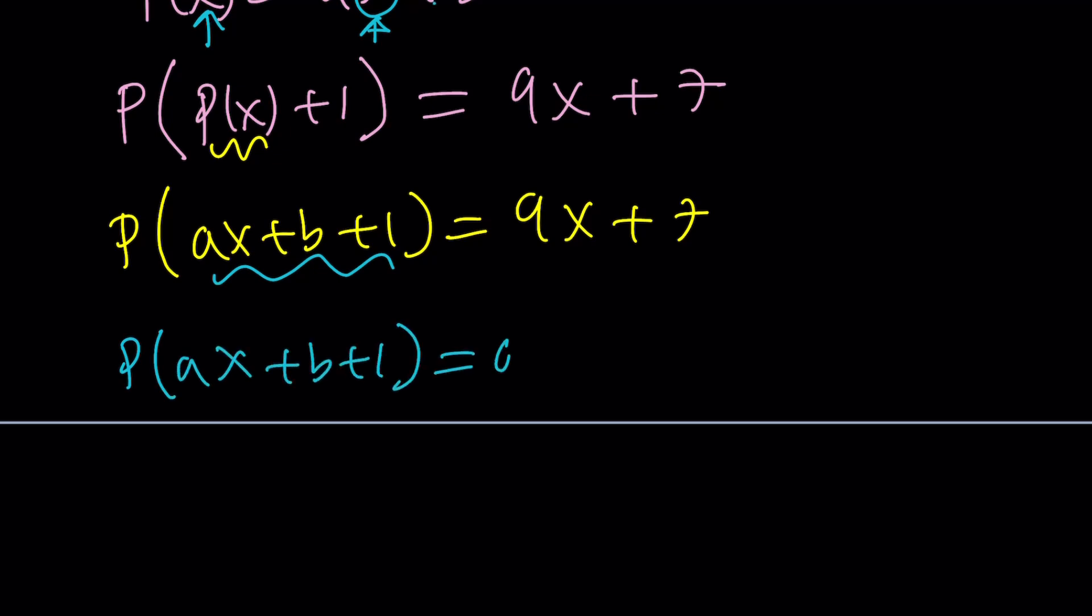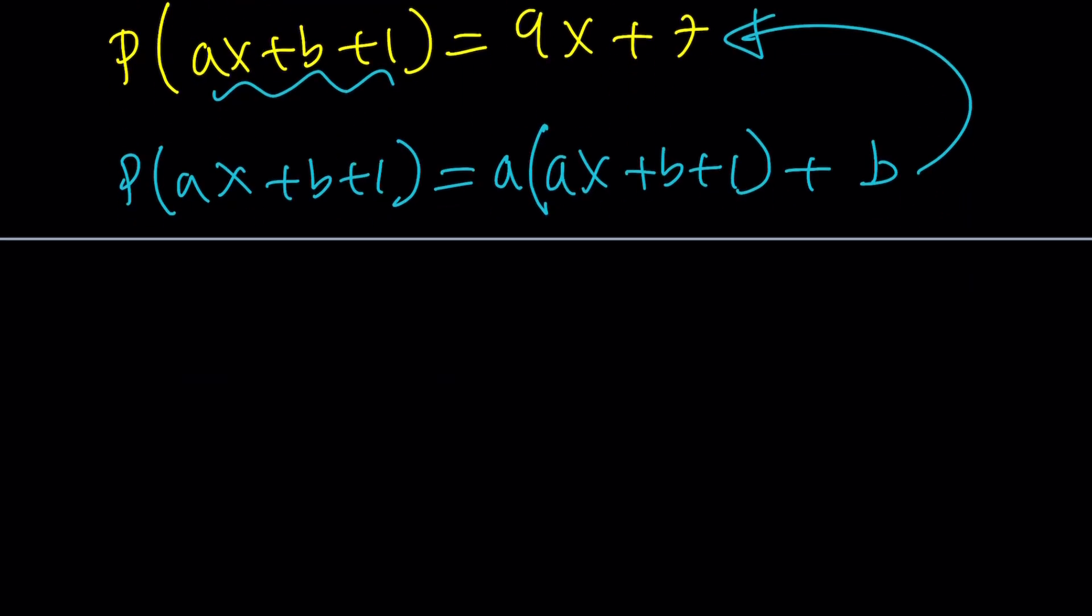But P of something is a times something plus b. So now we're going to replace x with ax + b + 1, of course, in both places. So P(ax + b + 1) is going to be, from here, a(ax + b + 1) + b. So P basically takes the argument, multiplies by a, and adds b. That's the rule. This should equal 9x + 7. Let's go ahead and expand it. a²x + ab + a + b = 9x + 7.